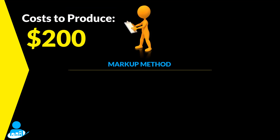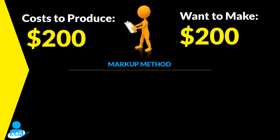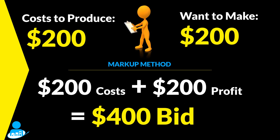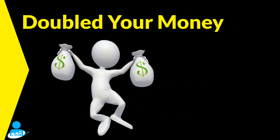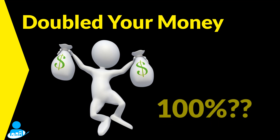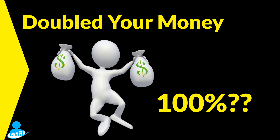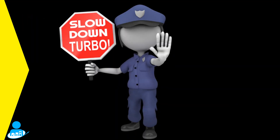For example, if you bid a job and you know the costs are going to be around $200 and you want to double your money, you take your $200 in costs plus your $200 in profit you want to make, so you bid the job at $400. You get the job and feel excited because you just doubled your money. Now, if I was to ask you what the margin was on the job, you might say 100% — after all, you did just double your money, right? Well, slow down. You might be surprised.